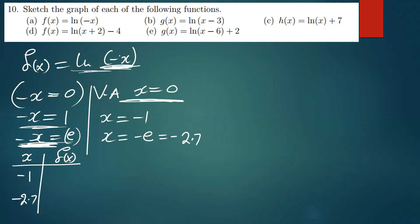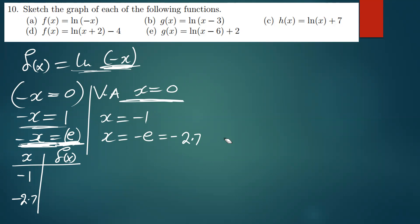The reason we equate to e is that e is the base for ln functions. If it were log base 10, we'd use 10; if log base 3, we'd use 3. This is exactly how you sketch log functions.